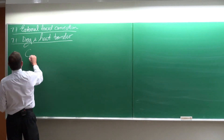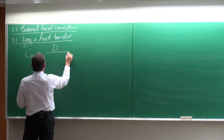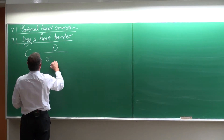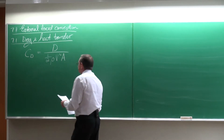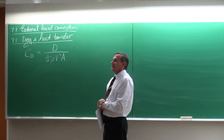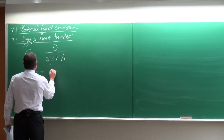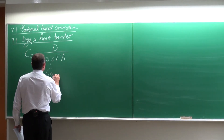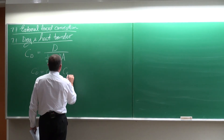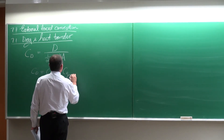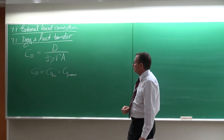The important thing is that the drag coefficient can be written as the drag force divided by half rho V squared multiplied by A. This drag coefficient is the combination of the drag coefficient of friction and the drag coefficient of pressure — the pressure drag.